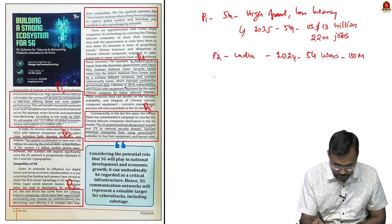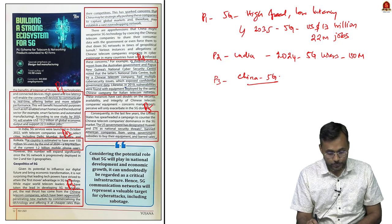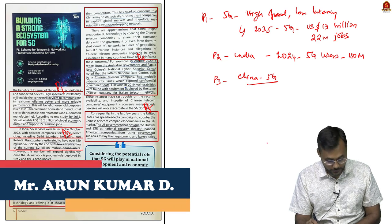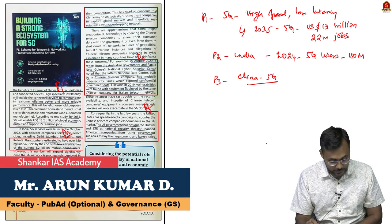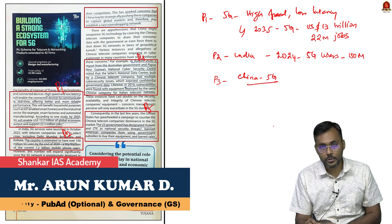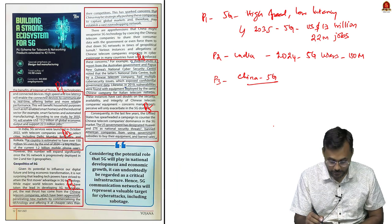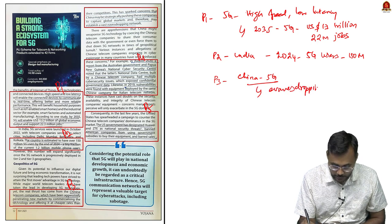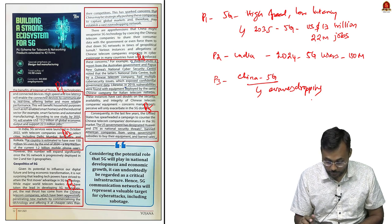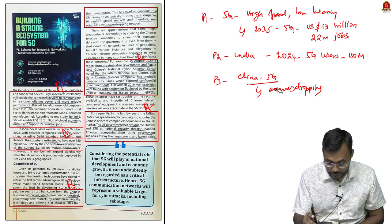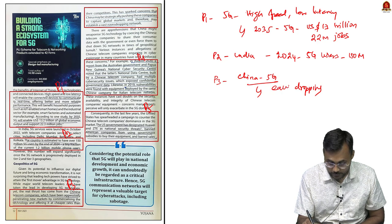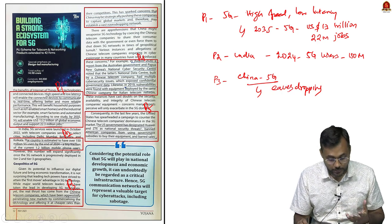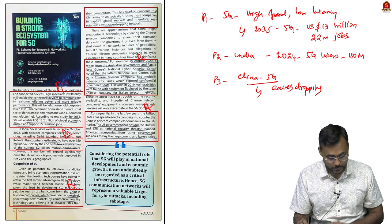Paragraph 3 speaks about the role of China: China is the country primarily focused on providing 5G technology, but it is also alleged that China uses this technology to spy on other countries — by providing hardware and software to other nations and listening to what is happening there.